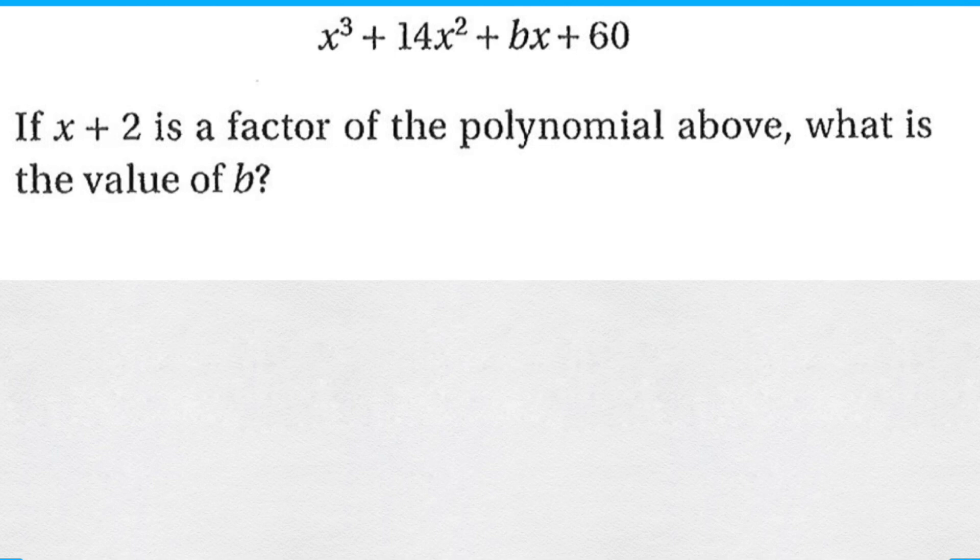Now the problem states that x plus 2 is a factor of the polynomial that's given and it asks for the value of b. So the fact that x plus 2 is a factor means that the polynomial is divisible by x plus 2 with a remainder of 0.